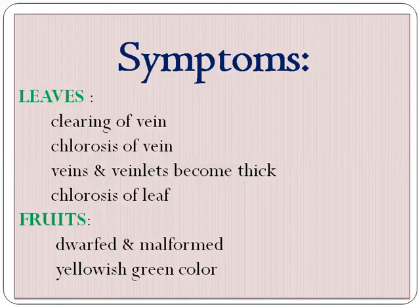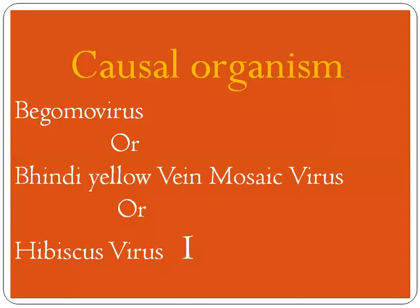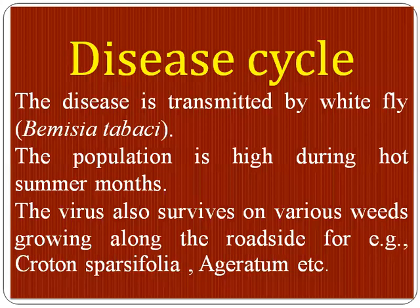In case of symptoms on the fruit, dwarfing and malformation are important characters. A yellowish-green color is found on affected fruits. Plant growth is stunted when compared with healthy plants. The causal organisms are the Begomovirus, Bhindi Yellow Vein Mosaic Virus (BYVMV), and Hibiscus Virus 1 — these three are the causal organisms responsible for this disease.